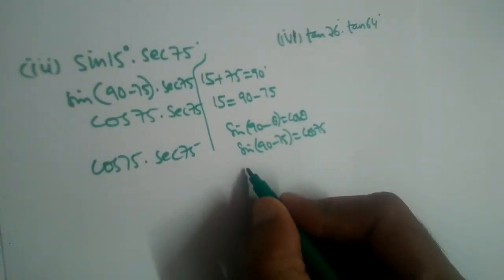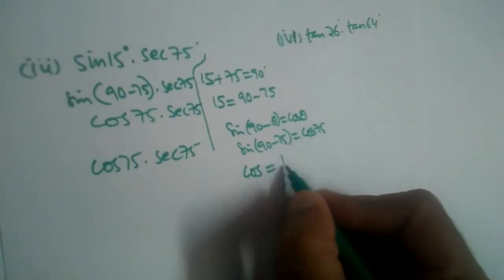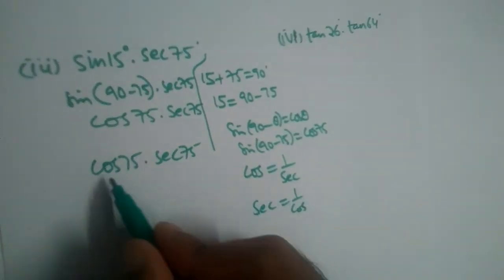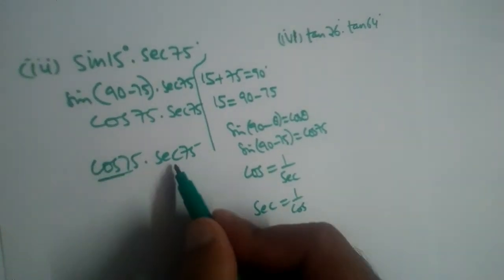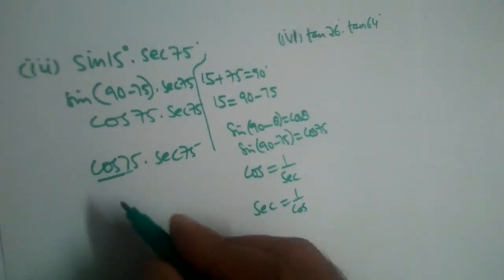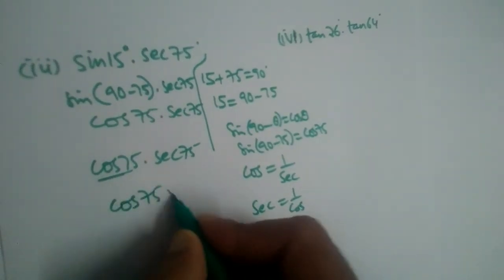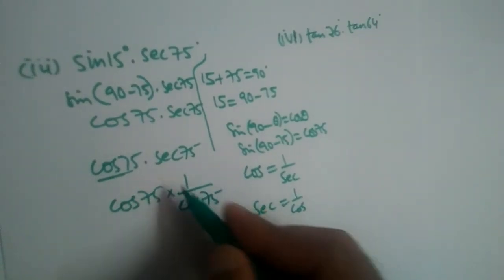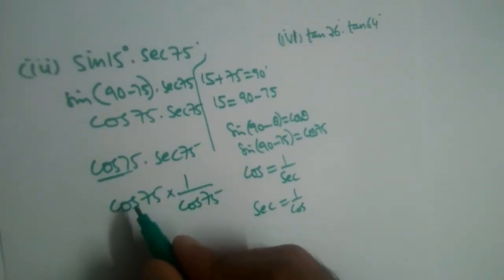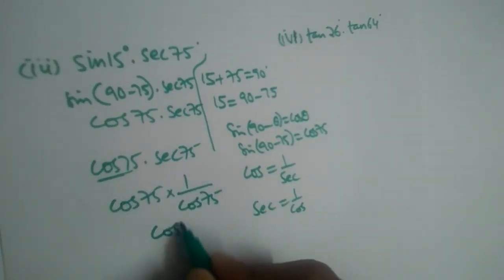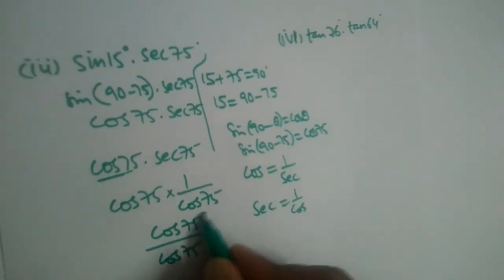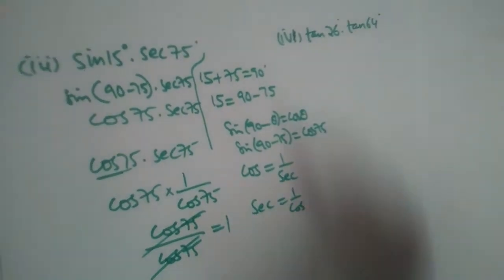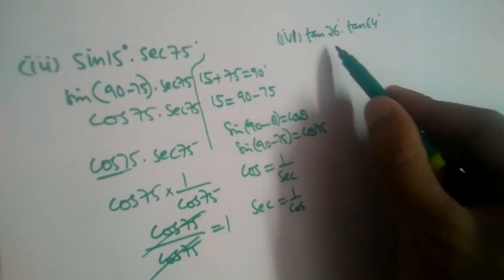Now, from the relationship between trigonometric ratios, cos = 1/sec and sec = 1/cos. So we write sec(75°) as 1/cos(75°). That gives us cos(75°) × 1/cos(75°), so the same values cancel and it equals 1. So pause the video and try to solve the next problem.